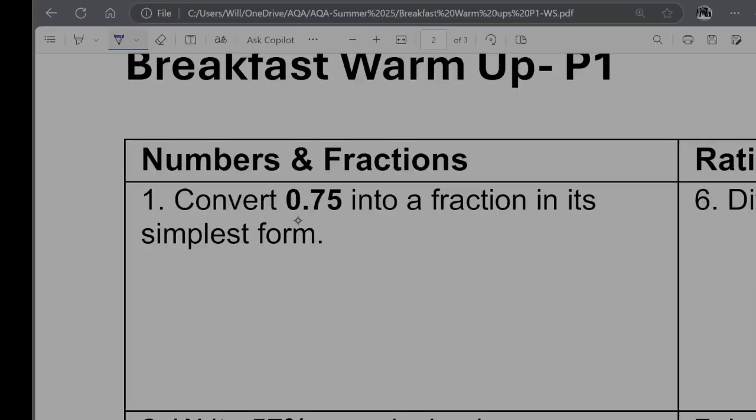Question one. Convert 0.75 into a fraction in its simplest form. I'm going to start by saying that that is 75 over 100. And then going to cancel down by 25s. So 25 will go into 75 three times and into 100 four times. So it's going to be 3 over 4.